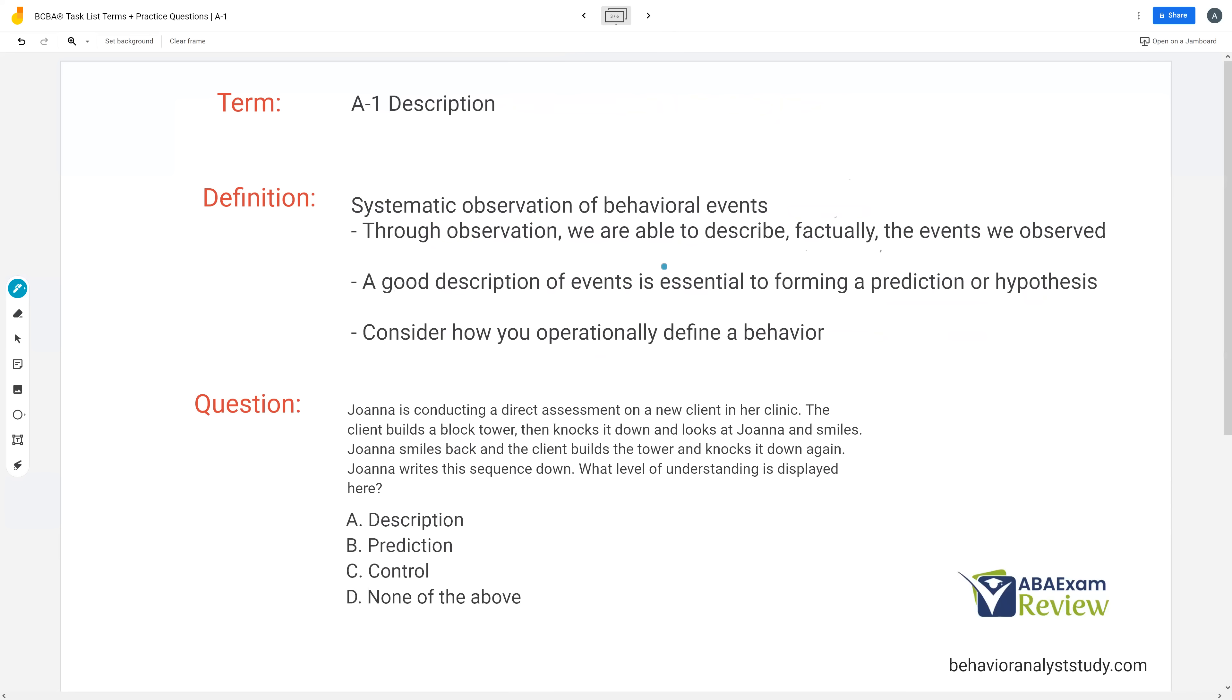So let's get to description. Description is the first level of scientific understanding. All it is, is the observation of behavioral events. We're not changing anything yet. We're not predicting anything yet. But all you're doing is you're sitting at that client's house, and you're observing behavior. You're observing the client interact with their environment. You're observing the client interact with their parents, with their siblings, and how the environment is responding back to that client's interactions. Again, all we're doing is observation.